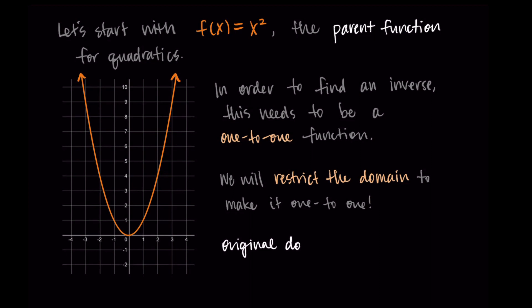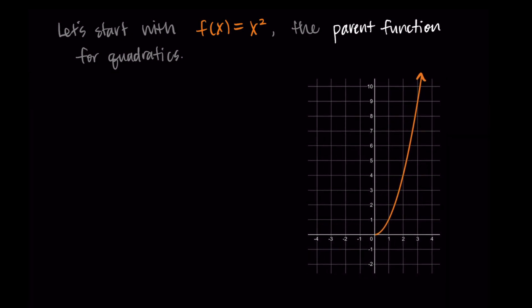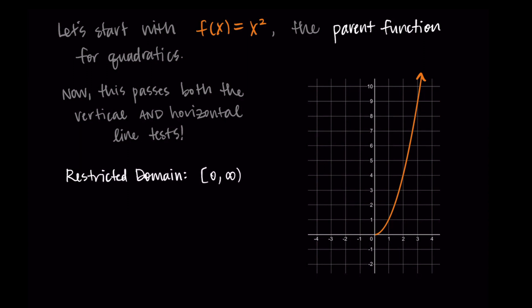Our original domain was negative infinity to infinity, and our range was zero to infinity. What I'm going to do is just take part of the domain in order to make this one-to-one. If we only had the left side of the graph, then every output has only one input. Or if we only had the right side of the graph, then every output has only one input. Technically we could choose either, but our standard convention is to choose the right side of the graph, or all of the inputs greater than or equal to zero. This new function passes both the vertical and the horizontal line tests and so it's one-to-one. The restricted domain is from zero to infinity and the range is from zero to infinity.